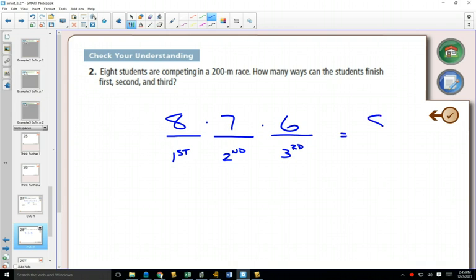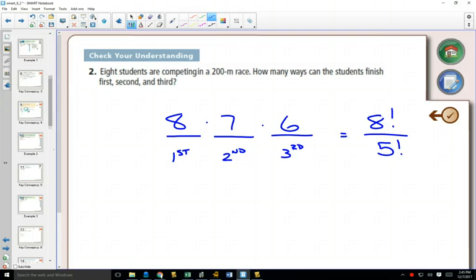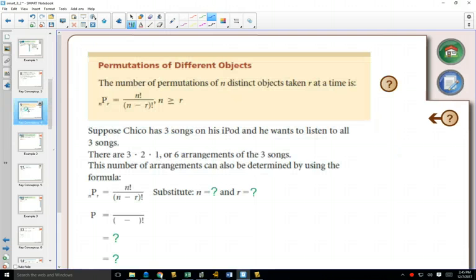Now, this happens to be the same as eight factorial over five factorial. And on the page previous to this one, they introduce you to this formula. So permutations of different objects taken are at a time. Now, this formula you're not going to use very often, because the spaces, in my opinion, are easier to use with your choices than to actually use the formula.